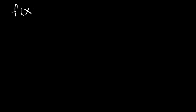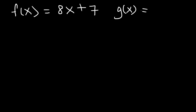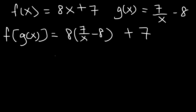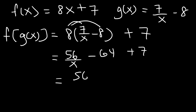Consider this example: let f(x) = 8x + 7 and g(x) = 7/(x − 8). Are these two functions inverses of each other? Let's compute f(g(x)): f is on the outside, so we put g inside f. We get 8·(7/(x − 8)) + 7 = 56/(x − 8) + 7 − 64/(x − 8)... which simplifies to something that does not equal x. Since f(g(x)) ≠ x, f and g are not inverses of each other.